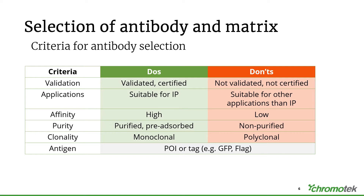If you are working with a recombinant antigen that carries a tag, you can also use an antibody directed against the tag, such as GFP-tag, LAC-tag, MYC-tag, or others. These may work even better in IP than an antibody against the protein of interest itself. Sometimes you may not have an antibody against the protein directly, so you have to rely on an anti-tag antibody.